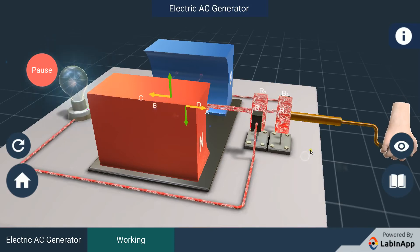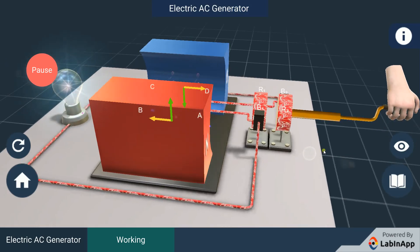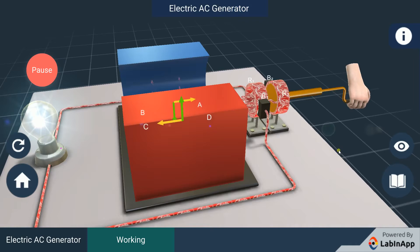The axle may be mechanically rotated from outside to rotate the coil inside the magnetic field.